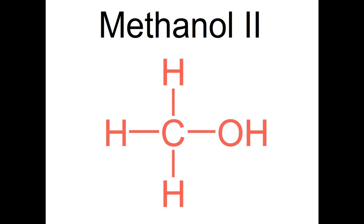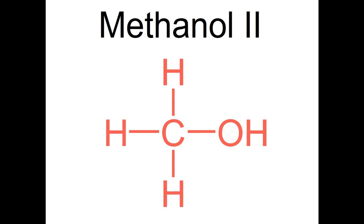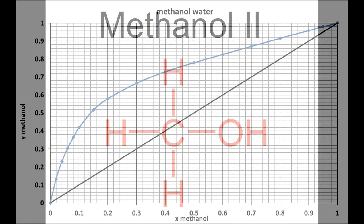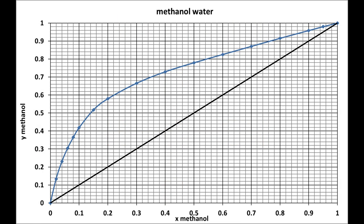A ternary system approximates binary systems when one of the three components is dominant, which water is in wash and ethanol is in azeotropic spirit. If we look at the binary methanol-water phase diagram and magnify the lower left-hand corner for low concentrations of methanol, things look quite encouraging.